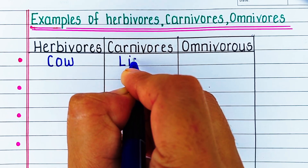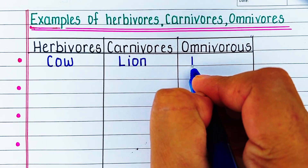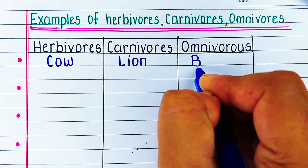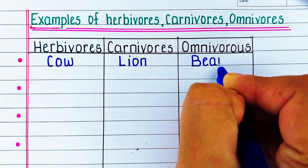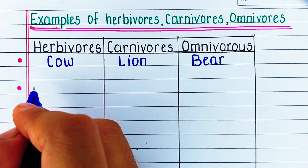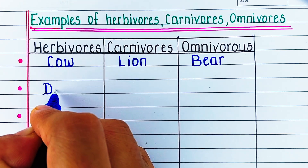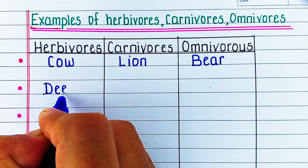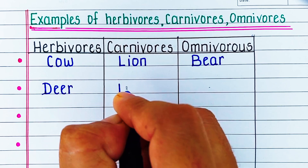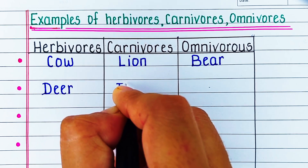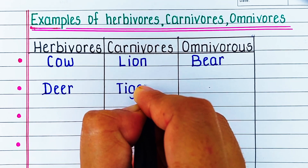Animals of all sorts live together in various ecosystems. Within these natural communities, the animals eat specific diets that connect them together in a food chain. The three diets of animals include creatures that eat only plants, those that eat only meat, and animals that eat both plants and meat. Animals that eat plants exclusively are called herbivores, and animals that eat only meat are called carnivores. When animals eat both plants and meat, they are called omnivores.